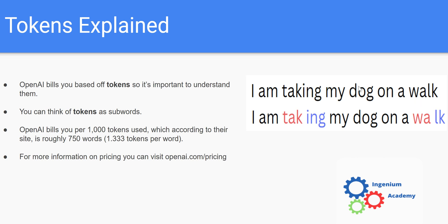So there are more tokens than words in this example — that's a high-level overview of how tokenization works. They wouldn't keep them as letters; they would be converted into numbers so that the model itself can actually generate outputs. If you want more information, you can visit openai.com/pricing, and they'll give you the cost per 1,000 tokens across several different models right there on their webpage.